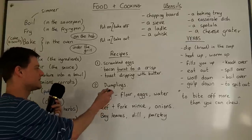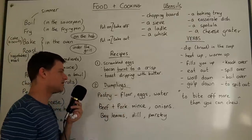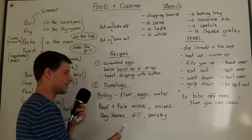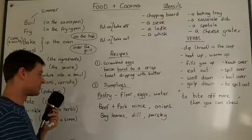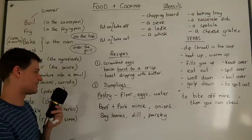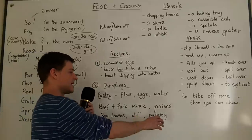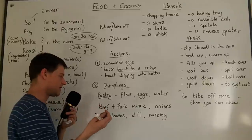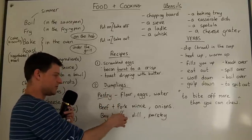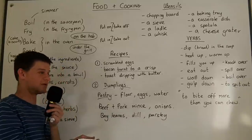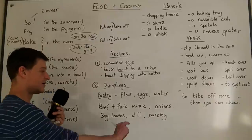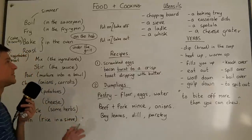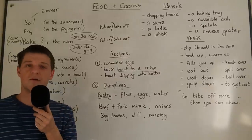At the weekend I actually did some cooking. I made dumplings — I needed to make the pastry first using flour, eggs, and water. I'd been to the shops and bought some beef and pork mince, which we mixed together with some onions, and put the mixture into little bits of pastry. Once I had the balls of pastry with the mince and onions inside, I boiled the dumplings for about five minutes with some bay leaves, sprinkled some herbs on top, and they were actually delicious. Thanks for watching — I hope those verbs have been useful. Please like the video and I hope to see you all soon.